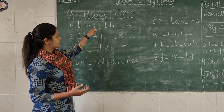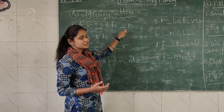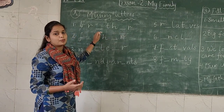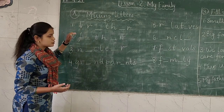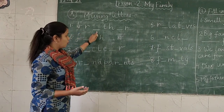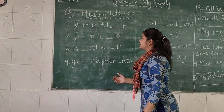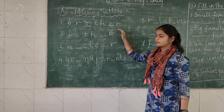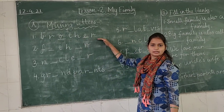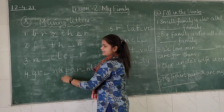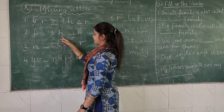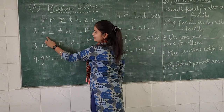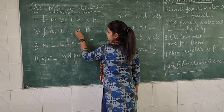Let's get started. First word: B-R-dash-T-H-dash-R. You must have understood — this word is 'brother'. So the correct spelling of brother is B-R-O-T-H-E-R. We write O in the first blank and E in the second. Now the next word: F-dash-T-H-dash-R. Very easy — this is 'father'. The correct spelling is F-A-T-H-E-R.